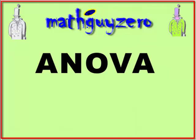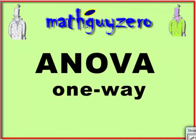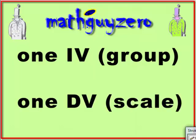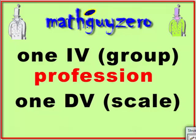I'm going to explain the two-way ANOVA, factorial ANOVA, by going over the one-way ANOVA first. A one-way ANOVA means you've got one IV, and it's a grouping IV — categorical or nominal — and you've got one DV, one and only one DV. It's scale, continuous, score, etc.